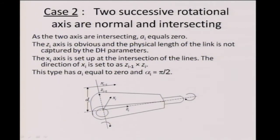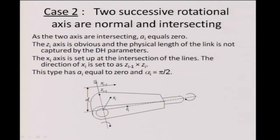The z_i axis passes through this joint, and there is a direction choice to take care of. You can pick either one of them. The interesting part here is that when you look at this link physically, you would suggest that there is some kind of length to the link — it looks like a piece which is roughly this long. But this length does not enter the picture at all in this scenario. Alpha is pi/2 if you have taken the cross product.